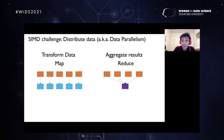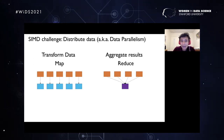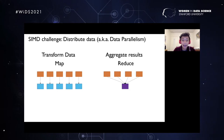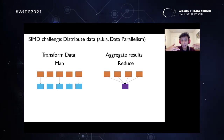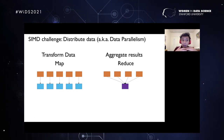For Single Instruction Multiple Data, we think about data parallelism. The main idea is to apply one instruction to different sets of data. There are two types of instructions: one that transforms data, usually called a map — orange boxes are transformed into blue boxes. Another instruction aggregates results: we take from multiple data sets and reduce them to one value, called a reduce. Most instructions where we have a single instruction with multiple data classify into either a map or a reduce.